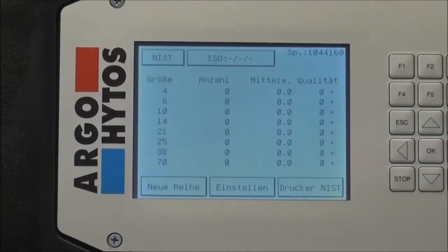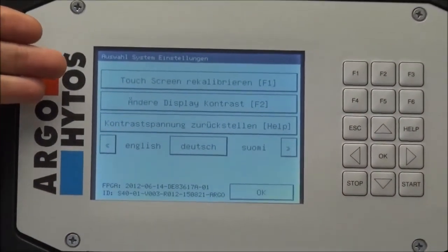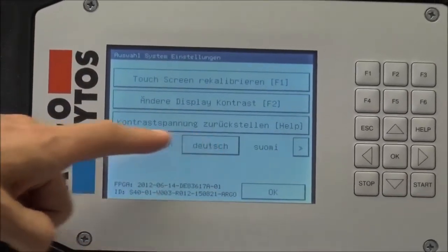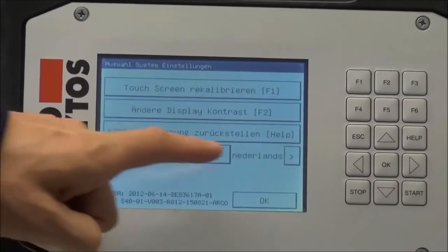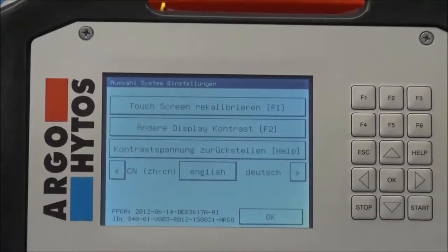To select the language of choice you just push the help button and then you can alter the currently used language. We have it in German now but we want to choose English. So we push the buttons till we have the English language.